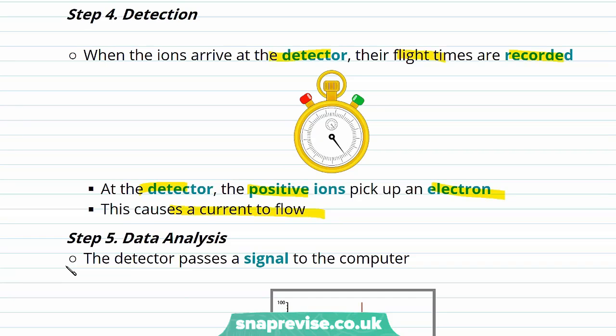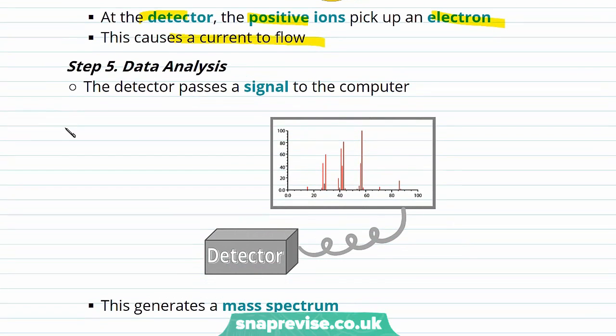This flow of current that's produced produces a signal and the detector passes this signal onto a computer which generates a mass spectrum. And you can see an example of a mass spectrum here. We'll take a look at mass spectra later in this video and see what information we can take from the mass spectra produced. So now we've had a look at the process of mass spectrometry.